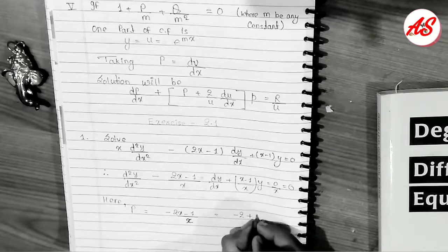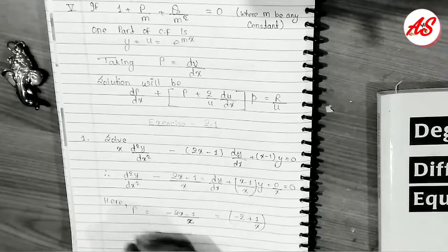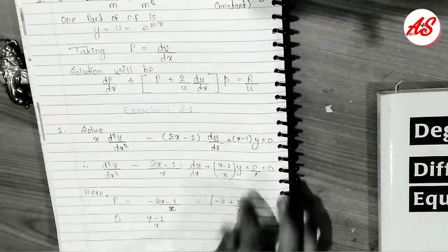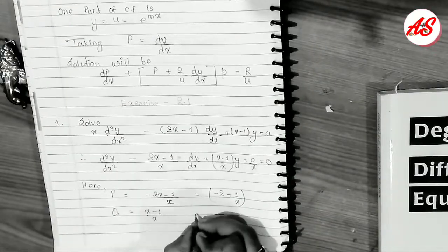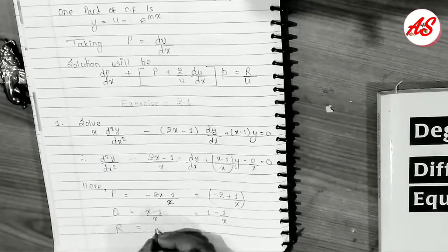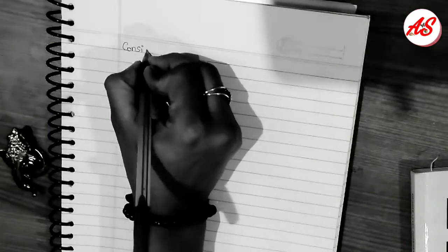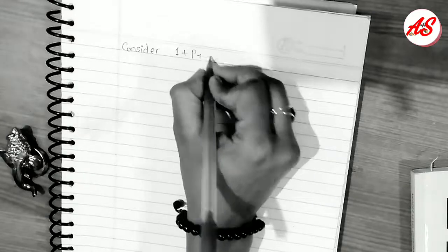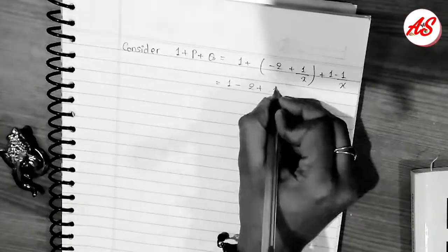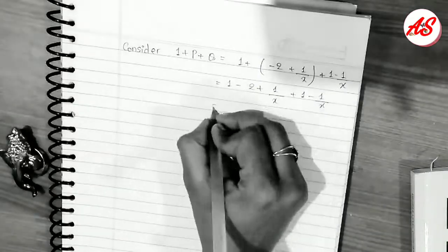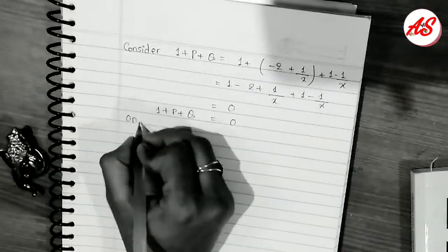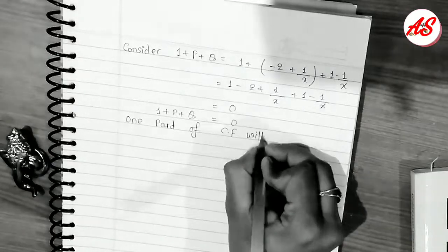The value of P = (−2x − 1)/x, Q = (x − 1)/x, and R = 0. We consider one of the five formulas where substituting P and Q makes the expression zero. Using the appropriate condition, one part of the CF is u = e^(2x).